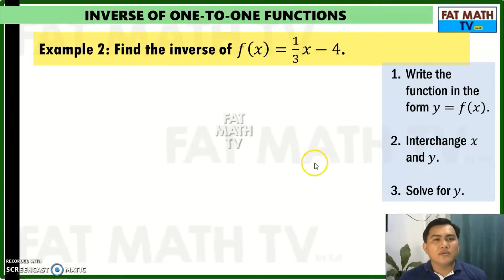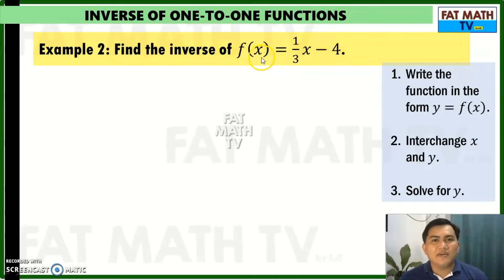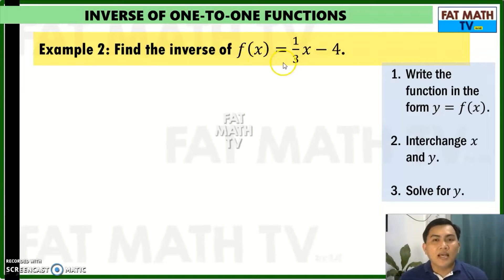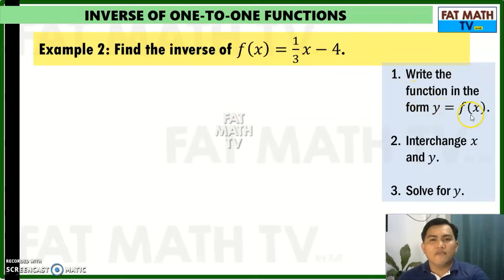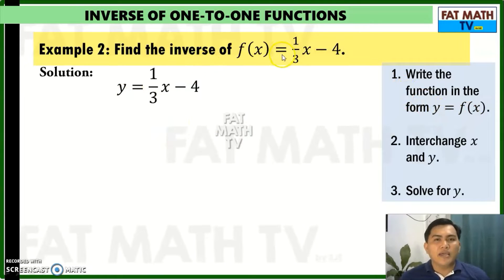Example number 2: find the inverse of f of x equals one-third x minus 4. You can pause this video and try it yourself, then find out if you got the correct answer. Let's follow the steps — write this in the form y equals f of x, so y equals one-third x minus 4.